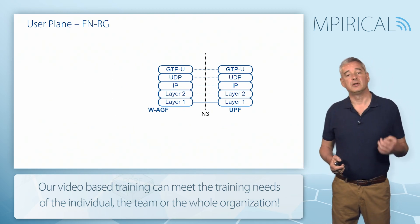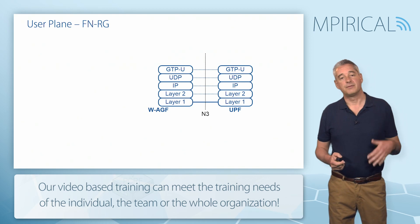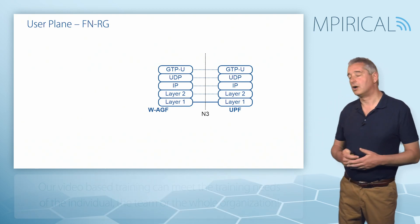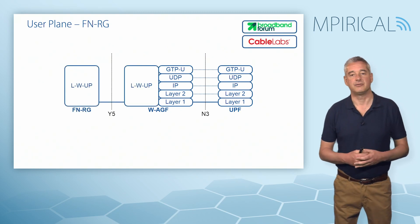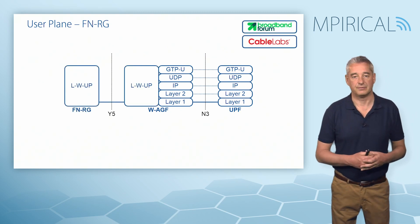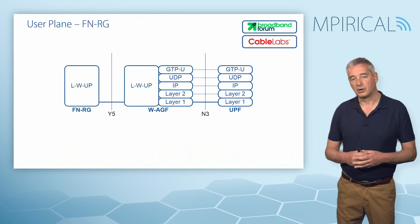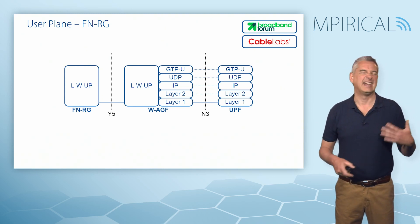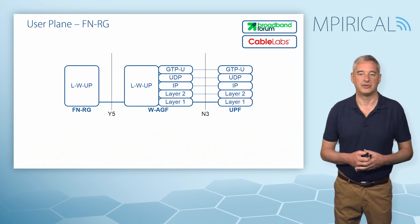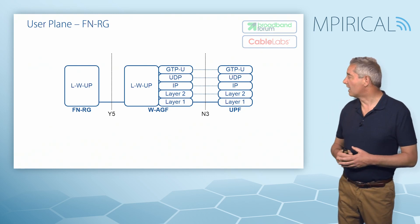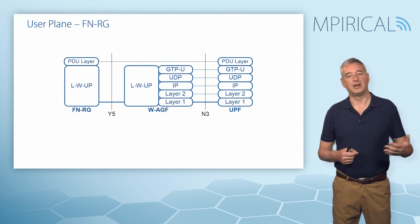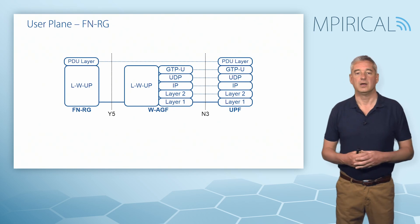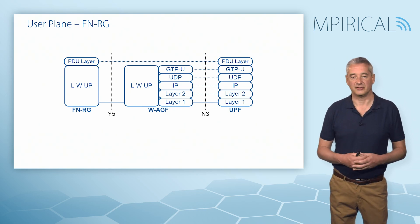That leaves us to look at the user plane for the Fixed Network Residential Gateway. It is very similar: sitting on N3, once again standard 3GPP-defined. But across Y5, we have the Legacy Wireline User Plane Protocol, carrying out much the same functions, with our PDU layer sitting across the top as we transfer user traffic across these 5G wireline access networks.